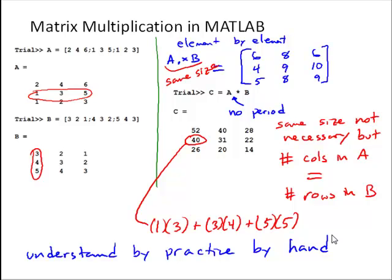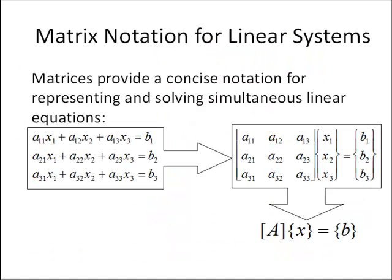So once we've defined matrix multiplication, we can actually use this to write a linear system of equations in matrix form. This gives us a really concise notation for doing so. So if we have a vector x, in this case we have a vector x that's defined as x1, x2, and x3, and this could be like three unknowns, for example, in a system of three equations and three unknowns,